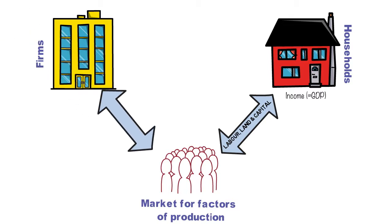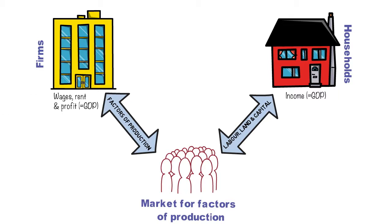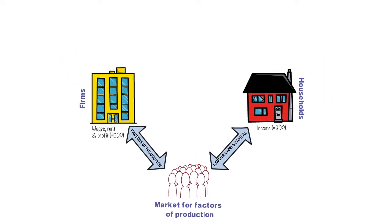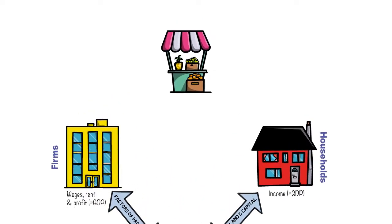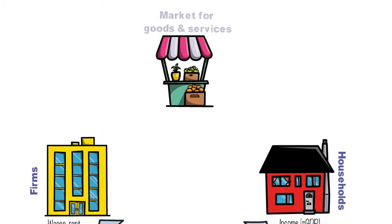Looking at GDP from the other perspective, we have firms who dip into this market looking for factors of production — land, labor, and capital — and they will pay a going rate in the market, be that wages, rent, and profits. If you add up this income level, you generate a GDP measure as well. We also have another market to join these different components.